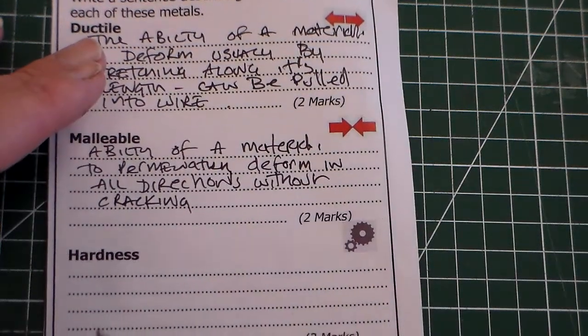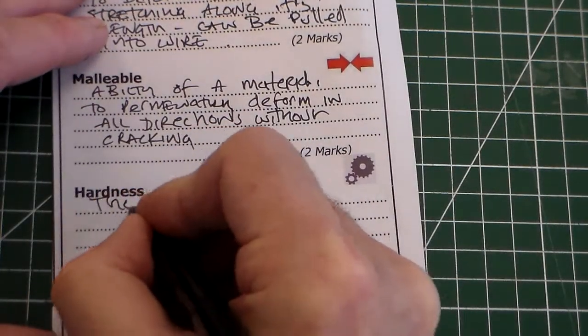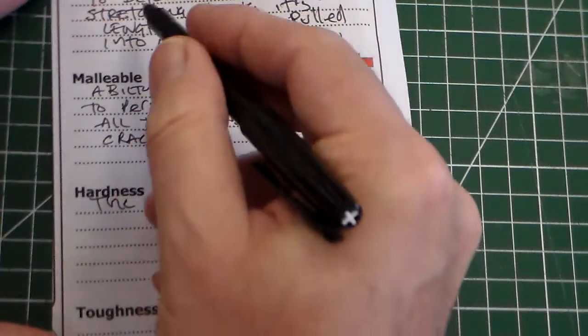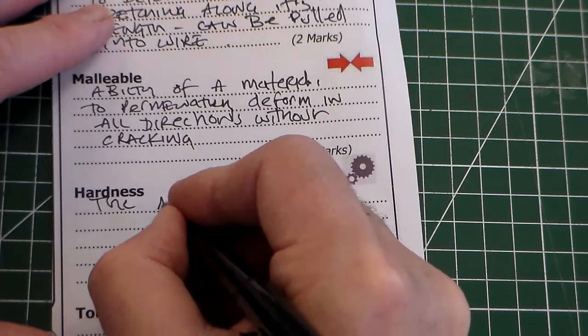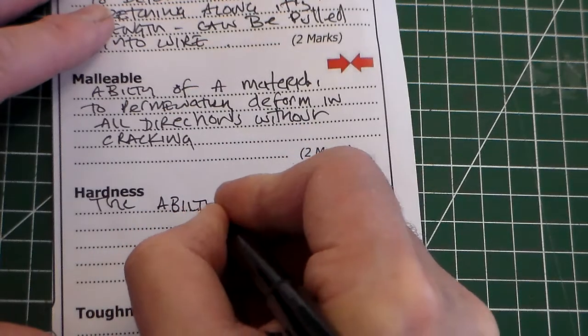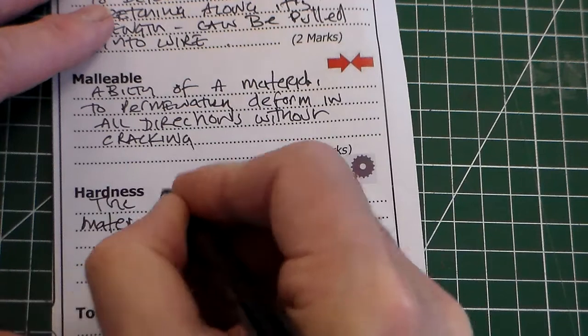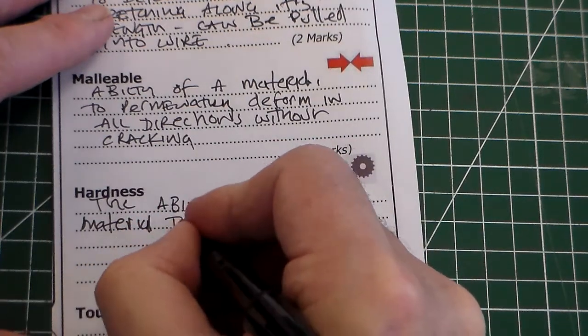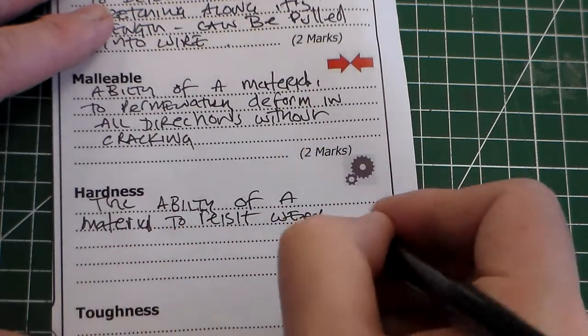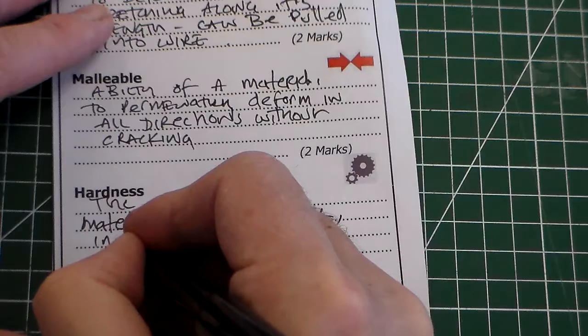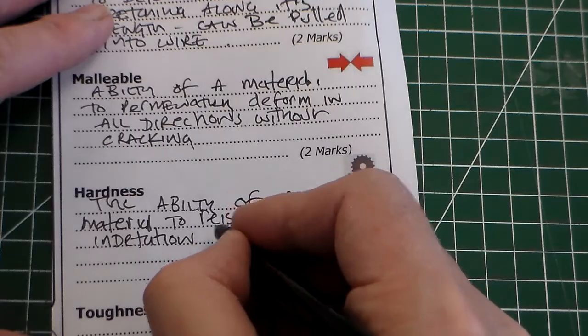Okay, the next one, hardness. So hardness is, now hardness I think is easier. The ductile and malleability, malleable, people get them confused, but hardness is the ability of a material to resist wear, indentation, and scratching.